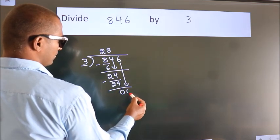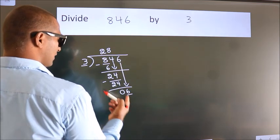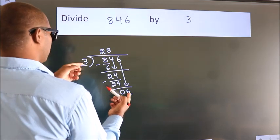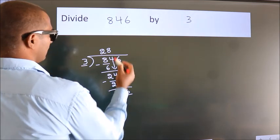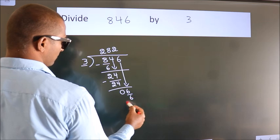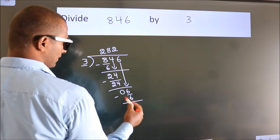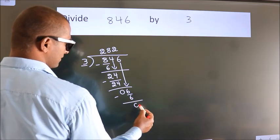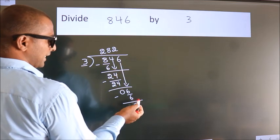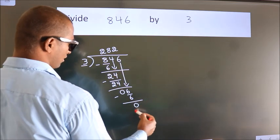So 6 comes down, giving us 6. When do we get 6 in the 3 times table? 3 twos are 6. Now we subtract and we get 0. No more numbers to bring down, so we stop here.